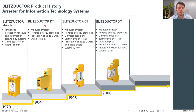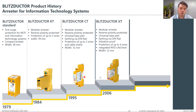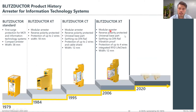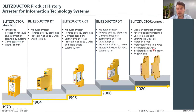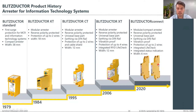The BLITZDUCTOR product history started in 1979 with the first BLITZDUCTOR. Throughout the years it evolved and became much smaller. In 2006 we launched BLITZDUCTOR XT, and in 2020 we released the new BLITZDUCTOR Connect.